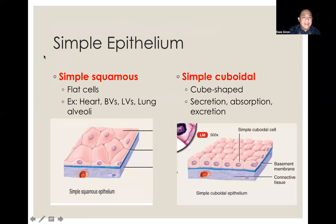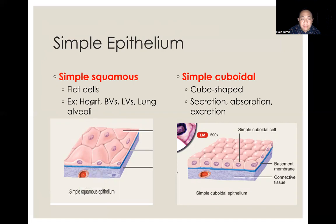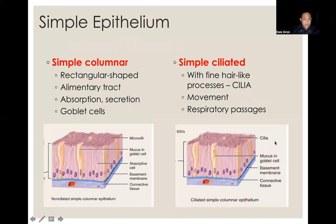To summarize the types: simple squamous has a single layer of flat cells, usually found in the heart, blood vessels, lymphatic vessels, and lung alveoli. Simple cuboidal has one layer of cube-shaped cells for secretion, absorption, and excretion, and is usually found in the kidneys. Simple columnar has rectangular-shaped cells found throughout the alimentary tract — also known as the gastrointestinal or GI tract. From the stomach down to the small intestine and large intestine, they are all simple columnar epithelium, mainly for absorption and secretion.